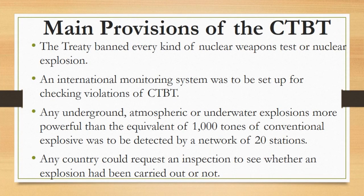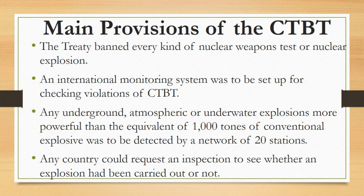Main provisions of the CTBT: First, the treaty banned every kind of nuclear weapons test or nuclear explosion. Second, an international monitoring system was to be set up under this treaty for checking violations of CTBT. Third, any underground, atmospheric, or underwater explosions more powerful than the equivalent of 1,000 tons of conventional explosive was to be detected by a network of stations.